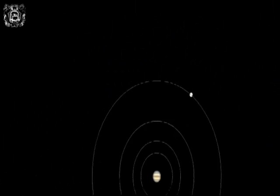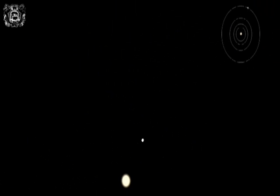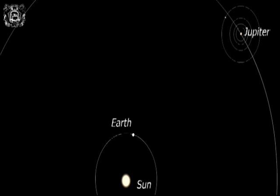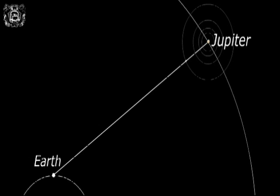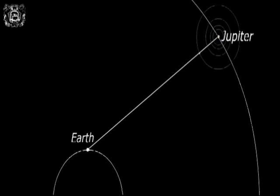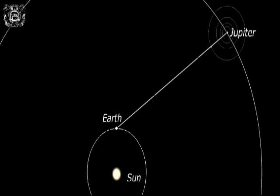However, the moon's observed positions vary with the relative positions of Jupiter and the Earth in the course of their revolutions around the Sun. For example, the timing of a moon's passage in front of Jupiter as seen from the Earth differs from the timing of the same phenomenon if it were observed from the Sun.